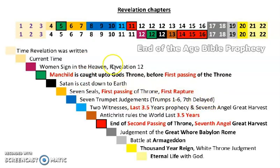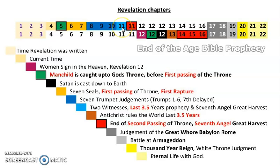So you have seven trumpets — trumpets one through four, five and six — and then in Revelation 10 the seventh angel is delayed, because the second woe, which is the two witnesses, has to happen first.